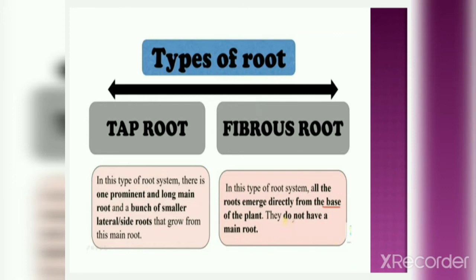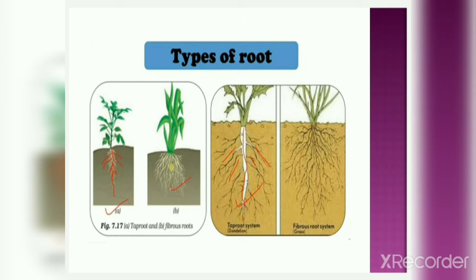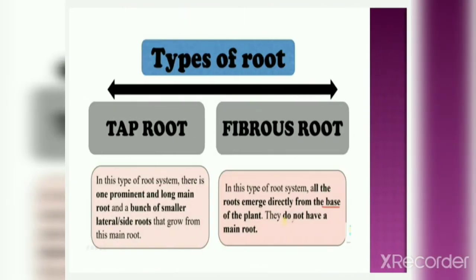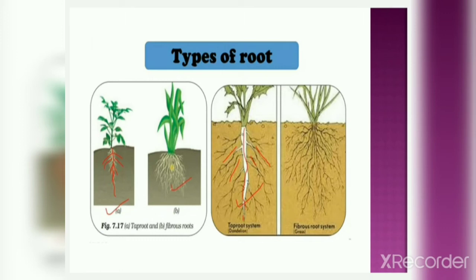In the tap root system, there is one prominent and long main root and a bunch of smaller lateral side roots that grow from this main root. You can see in figure A — a long prominent main root and the lateral roots coming out of it. This type of root system is called tap roots. In the fibrous root system, all the roots emerge directly from the base of the plant — they do not have a main root, as seen in figure 7.17b. This type of root system is called a fibrous root system.